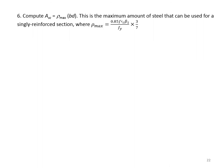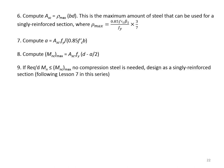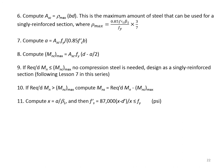By knowing A_sc, the maximum steel for a singly reinforced section, we compute the corresponding a, and in step 8 compute M_nc_max equals A_sc × f_y × (d minus a/2). This M_nc_max is used to determine whether compression steel is needed. In step 9: if the required M_n is smaller than M_nc_max, no compression steel is needed — design as a singly reinforced section following lesson 7. In step 10: if required M_n is larger than M_nc_max, compression steel is needed, and the additional required strength is M_ns equals required M_n minus M_nc_max.